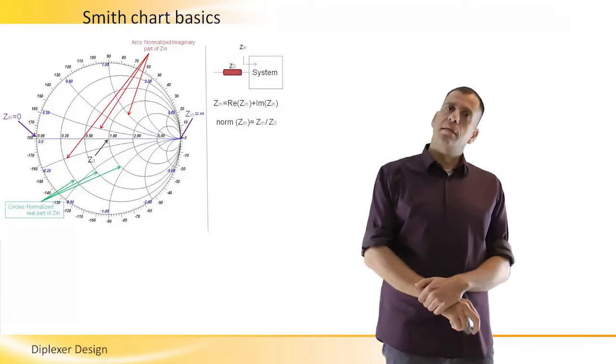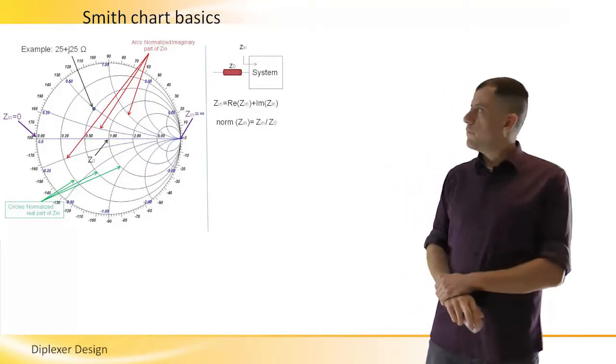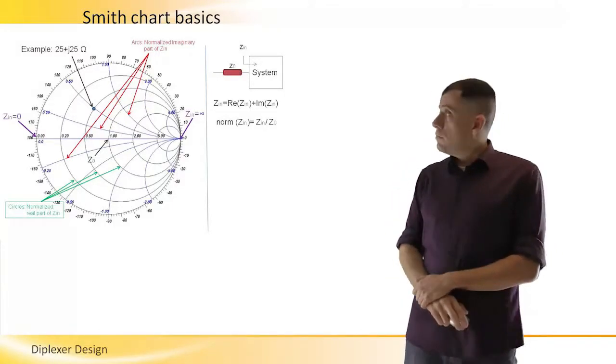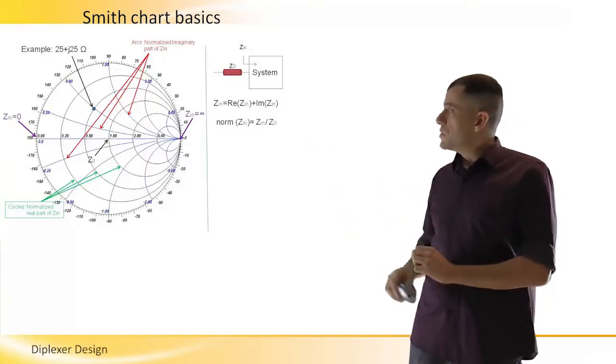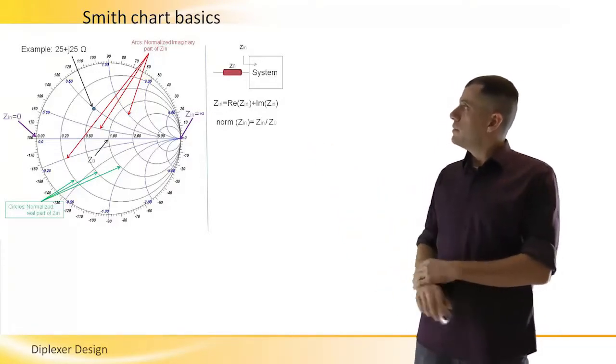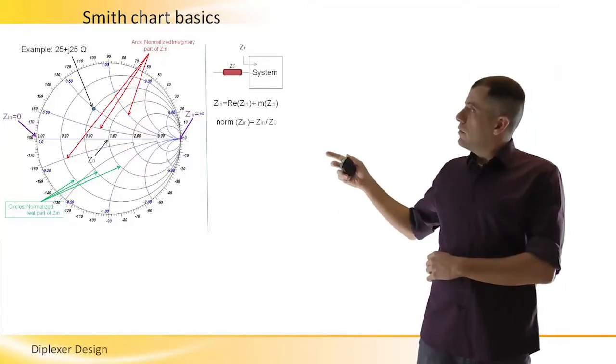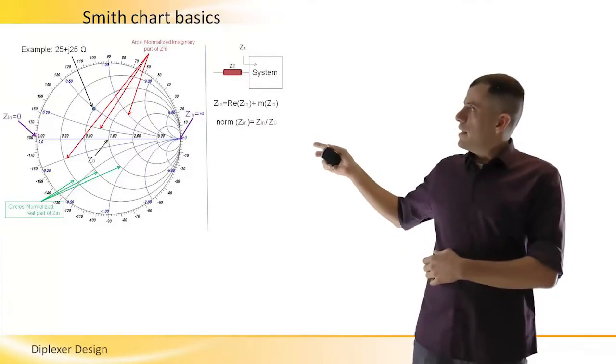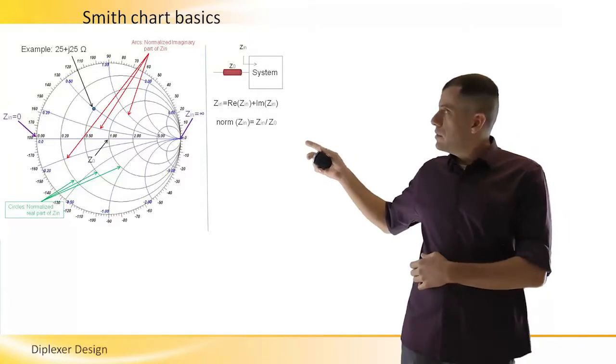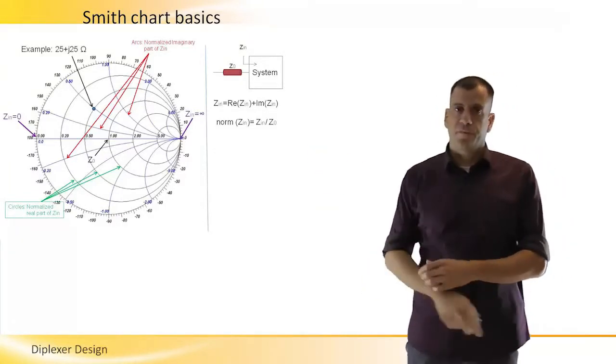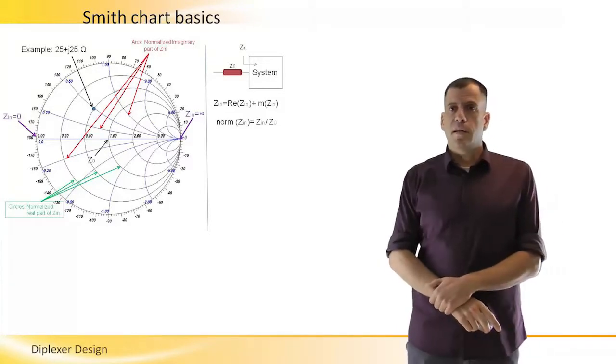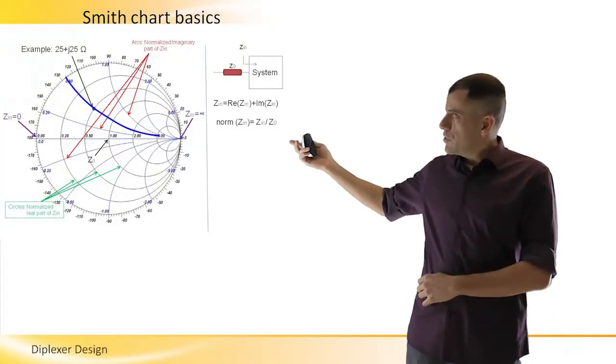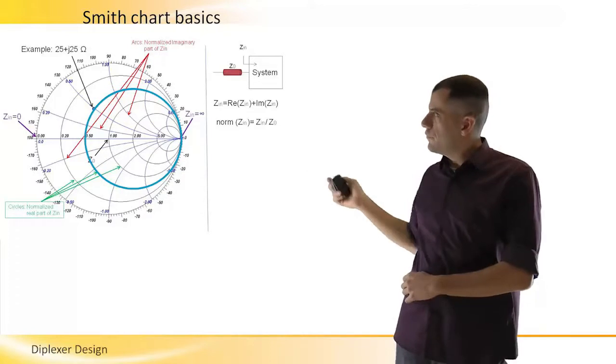Now here is an example of input impedance 25 plus j25 ohm, which is for a 50 ohm system, meaning a system that has a transmission line of 50 ohm at its terminal. The characteristic impedance normalized would be 0.5 plus j0.5. In this case, we see the impedance is located on the arc 0.5 for the imaginary part and on the circle 0.5 for the real part.